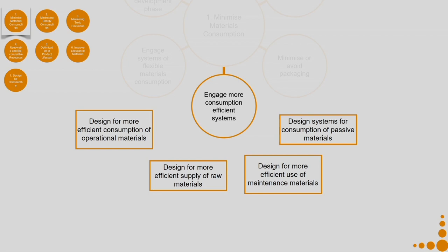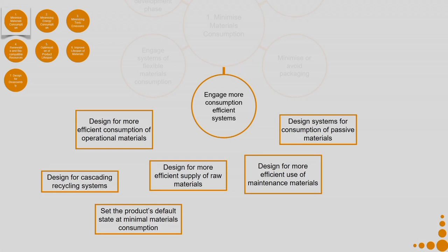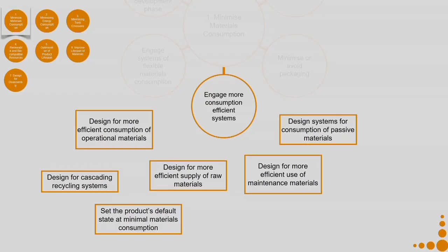Design systems for consumption of passive materials — materials which do not have much impact on the environment. Design for cascading recycling systems so that they can be recycled. Set the product's default state at minimal material consumption. For example, in a printer, if the default is set to best printing quality, you consume more ink. But if the default is set to a medium level of printing, even users who do not change settings will use ink more optimally.